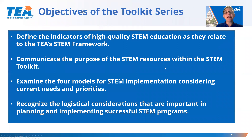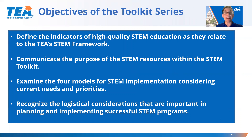The objective for this video is to empower leaders with information to help guide and support STEM decisions. Participants are going to be able to define the indicators of high-quality STEM education as they relate to TEA's STEM framework, communicate the purpose of the STEM resources within the STEM Toolkit, examine the four models of STEM implementation considering current needs and priorities, and recognize the logistical considerations that are important in planning and implementing successful STEM programs.